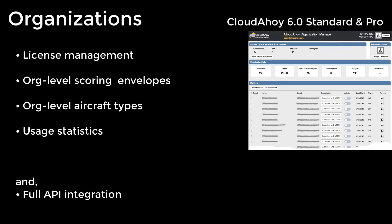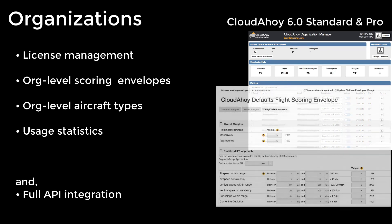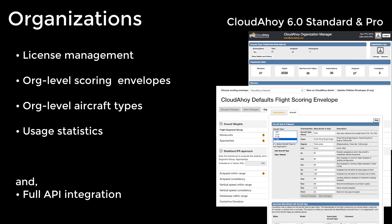If you're running an organization such as a flight school, a squadron, or a commercial fleet, the organization manager provides license management, customizable scoring envelopes throughout the organization, org-level aircraft types, usage statistics, and Cloud Ahoy APIs for tighter integration with existing systems.